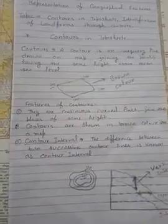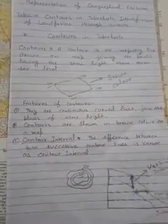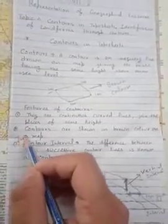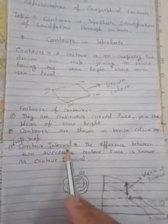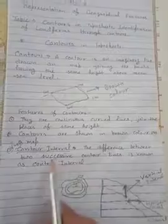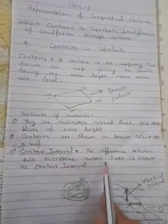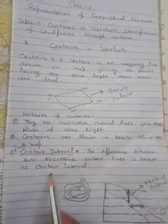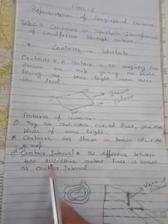Now, contour interval — this is the most important concept. The contour interval is the difference between two successive contour lines. Successive means regular — the difference between one contour line and the next one adjacent to it.